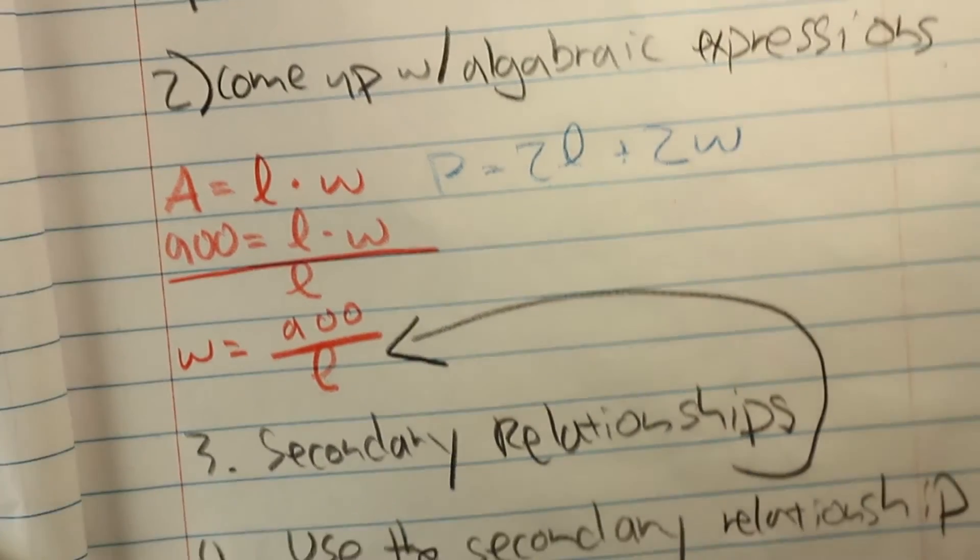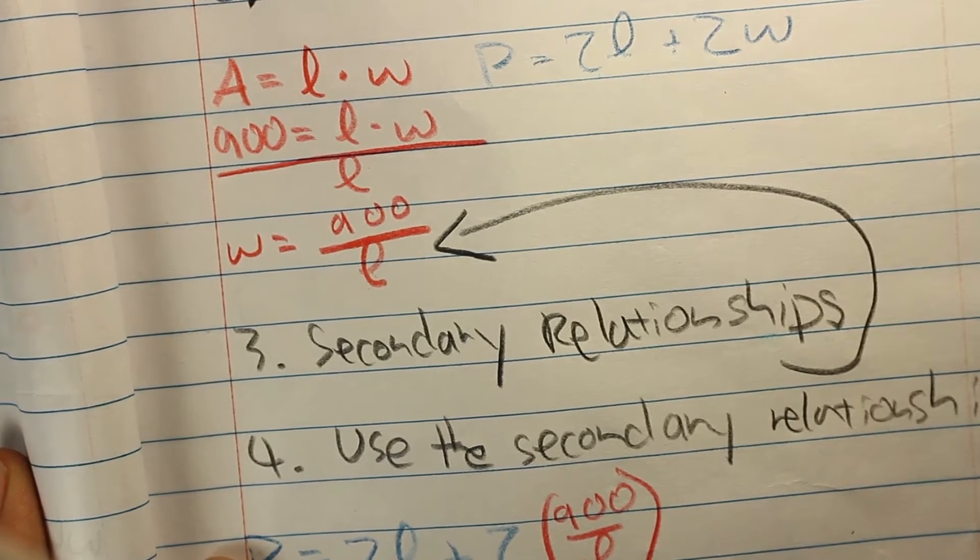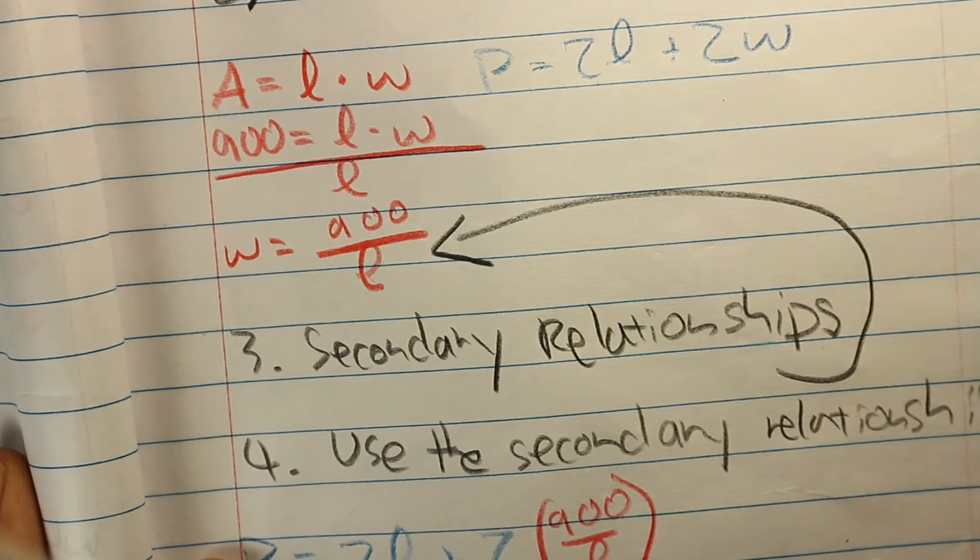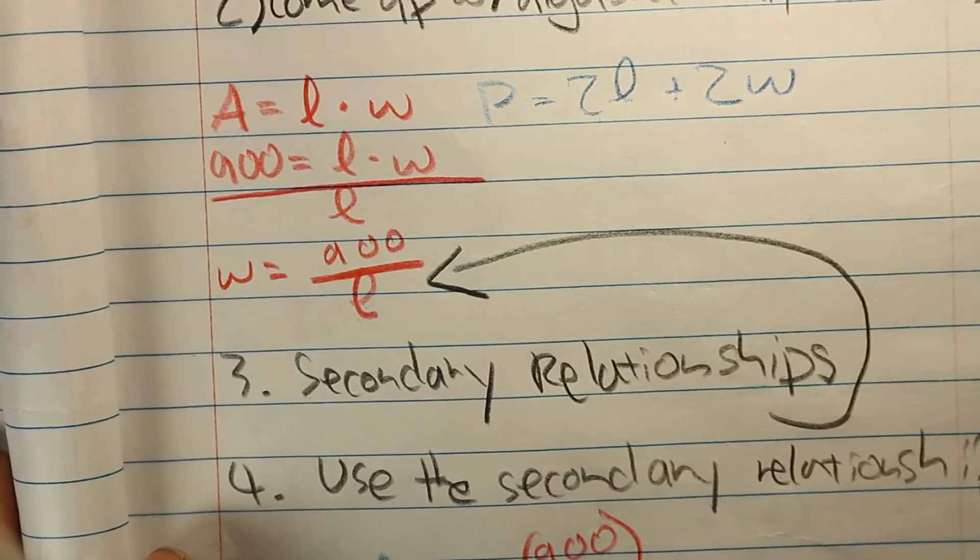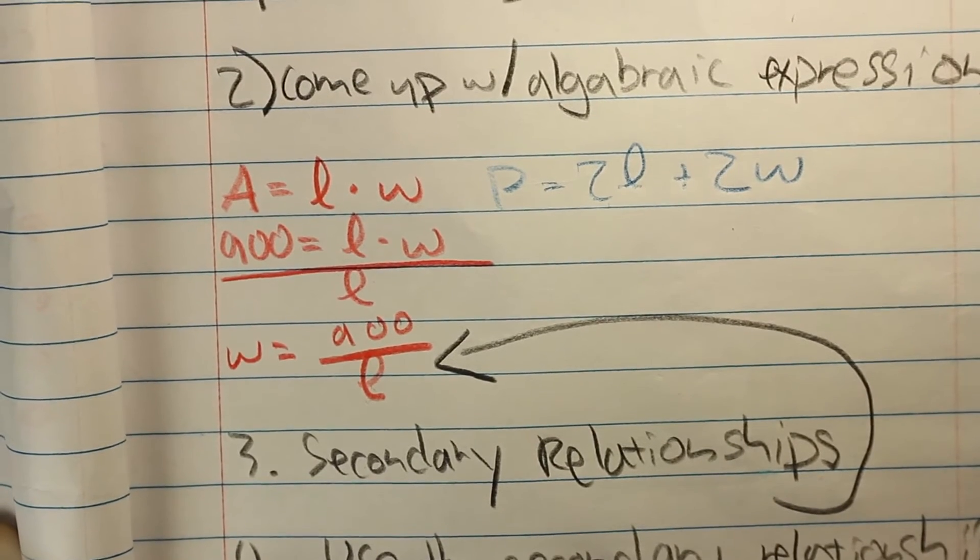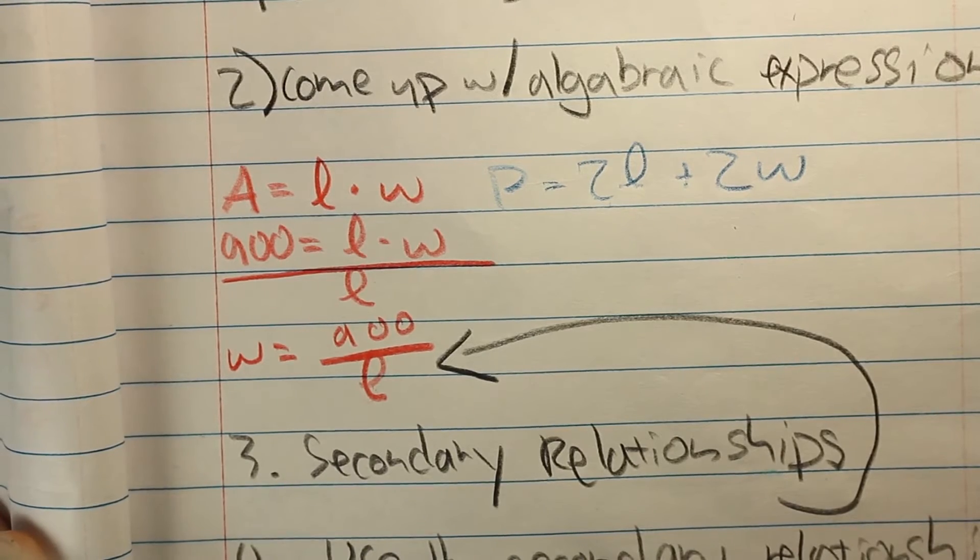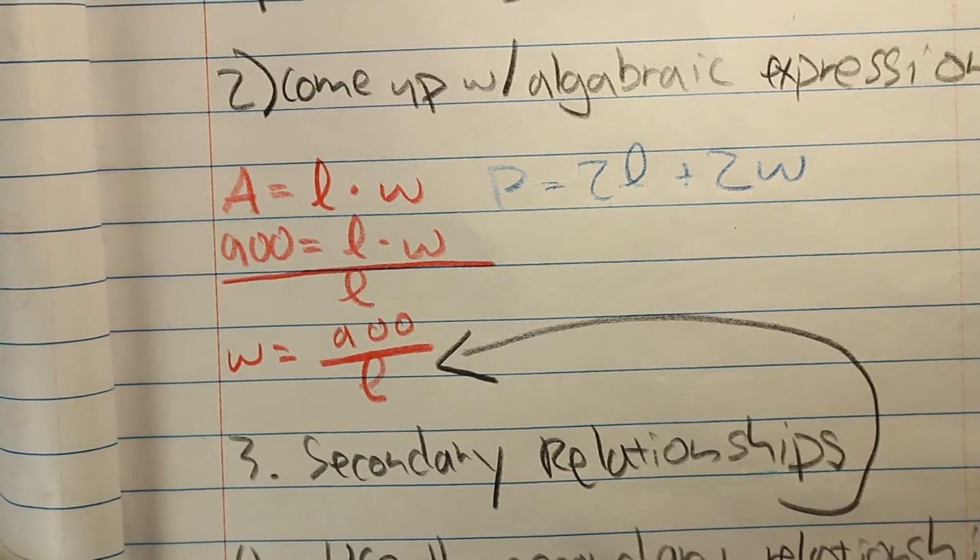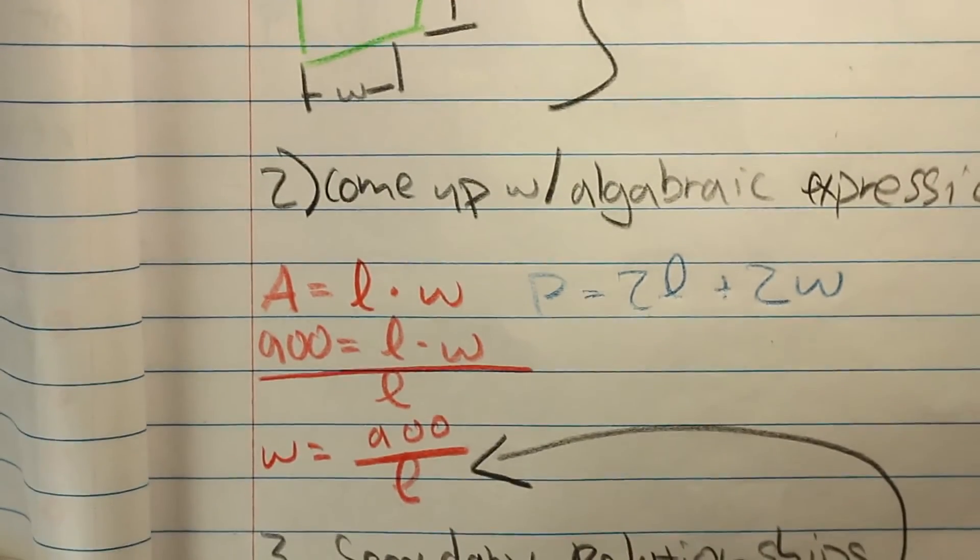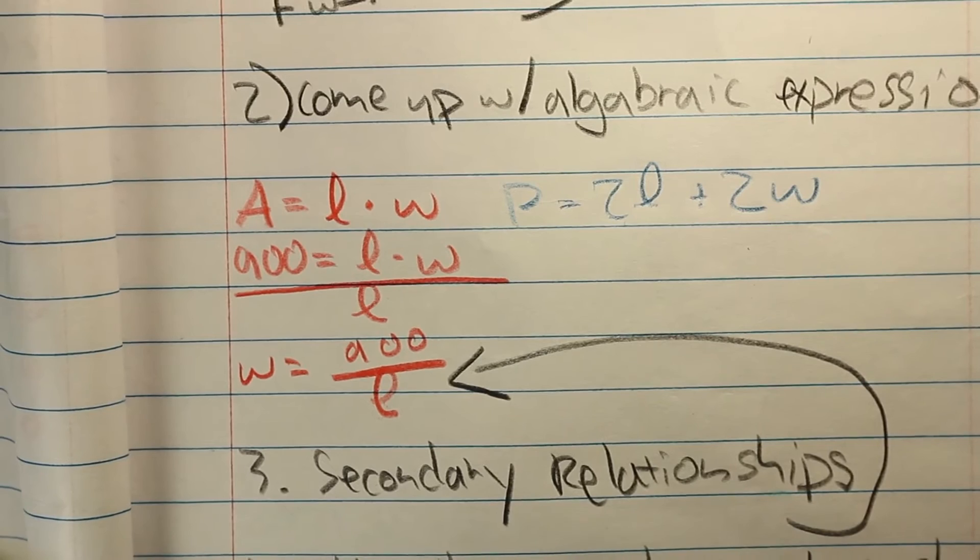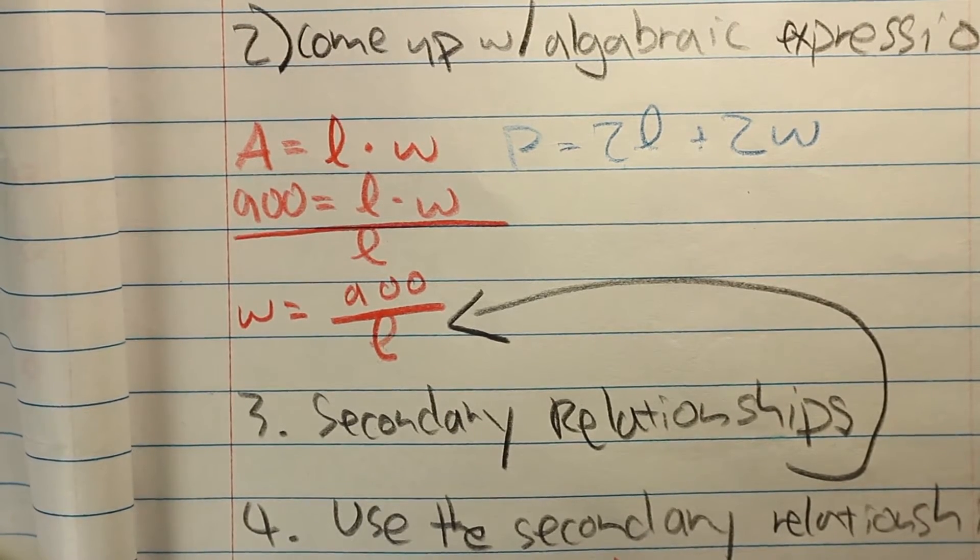From here, we can create a secondary relationship that we can use to solve the problem. To create the secondary relationship, we need to narrow down the problem so that we can use one variable. As you can see right now, it says that area is length times width, meaning area is equal to 2 variables. However, because you want to use one variable, we can set area to 900 square feet and solve for either length or width. In this case, we said width was 900 over L.